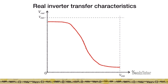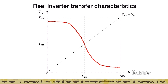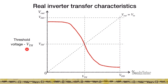We'll try to define some key transition points in this transfer characteristic. The most important transition point is the switching threshold voltage, which marks the transition between the top half of the curve where the output was high and the bottom half where the output is low. Vth is defined as the voltage at which, when applied at the input, you get the same voltage at the output. This is the most unstable point in the circuit, where both input and output voltages are Vth.